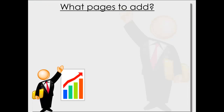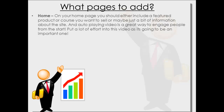So what pages to actually add to your website. Obviously you want to have a home button. On your website you should always add a logo — typically in the top left corner. Add a link to your homepage because a lot of people will click on the logo, so you want that to link back to your homepage. On your homepage you should include a featured product or course you want to sell, or just some information about the site. An auto-playing video is a great way to engage people from the start, so put a lot of effort into that video — it's the first introduction and should capture people straight away.